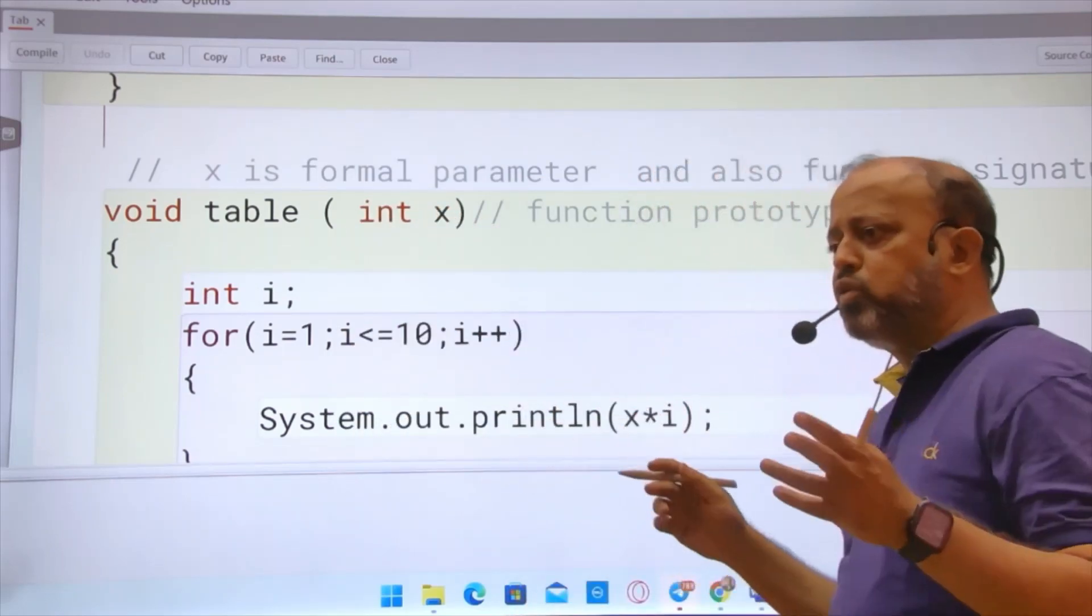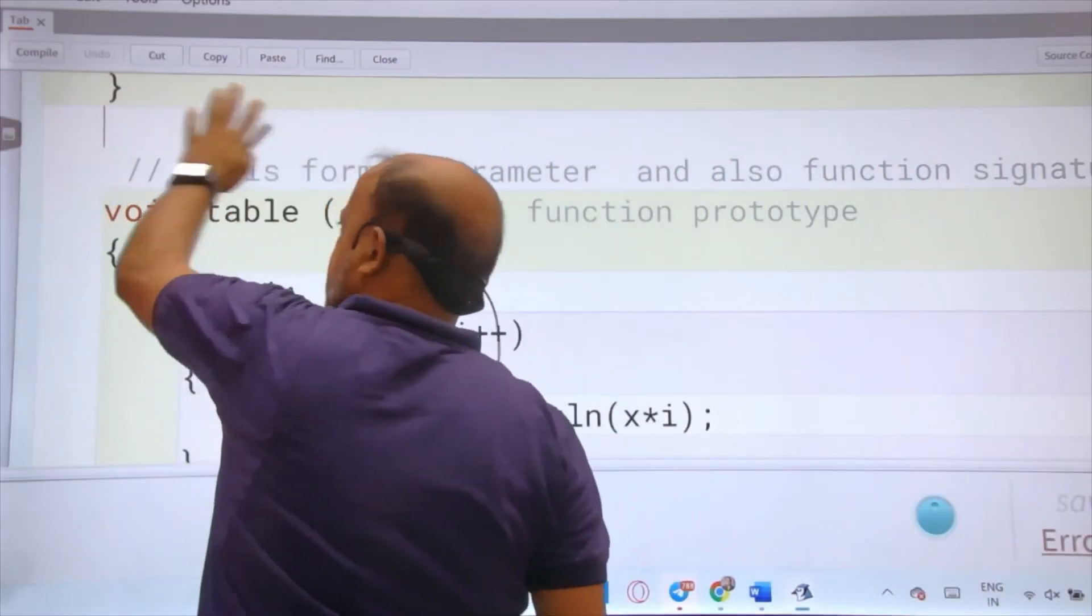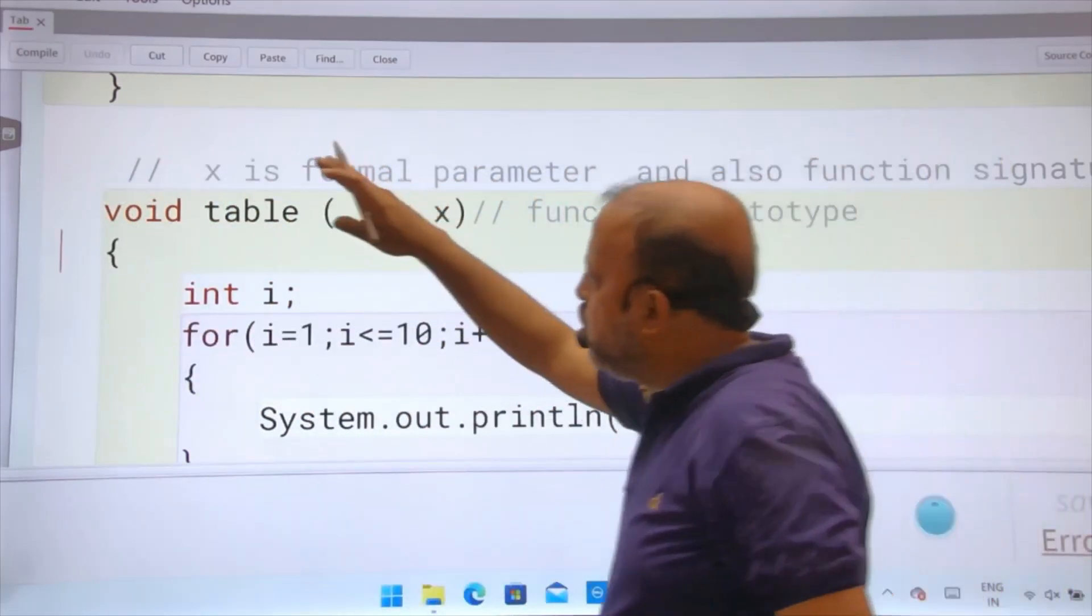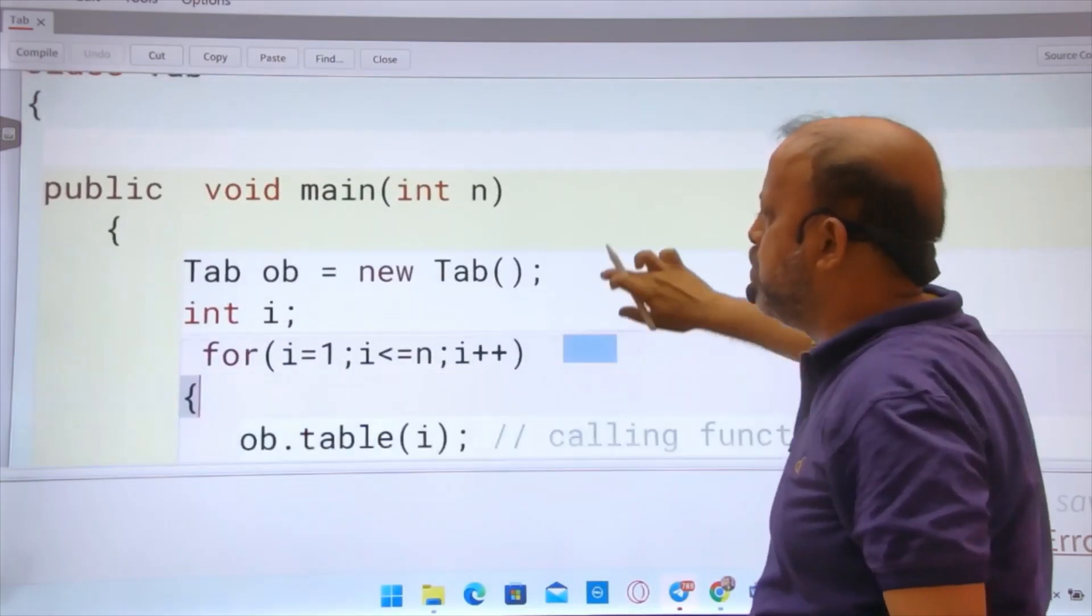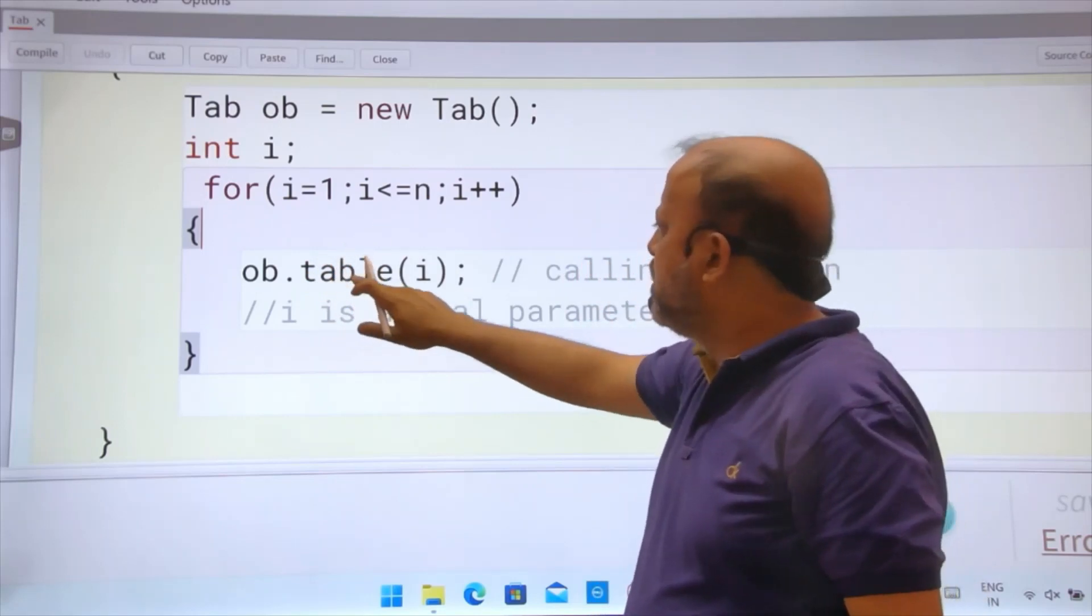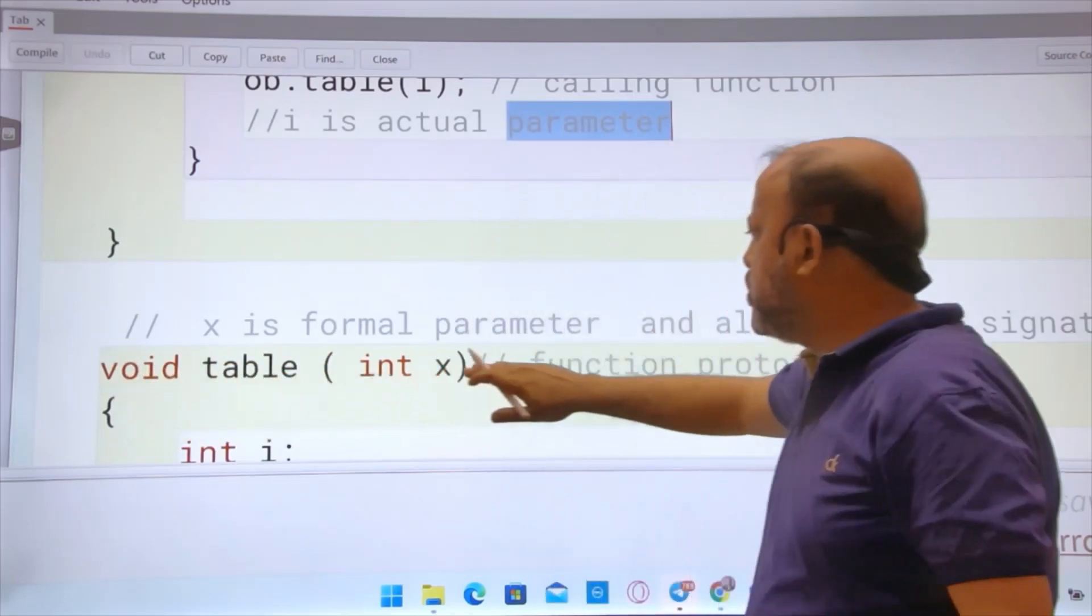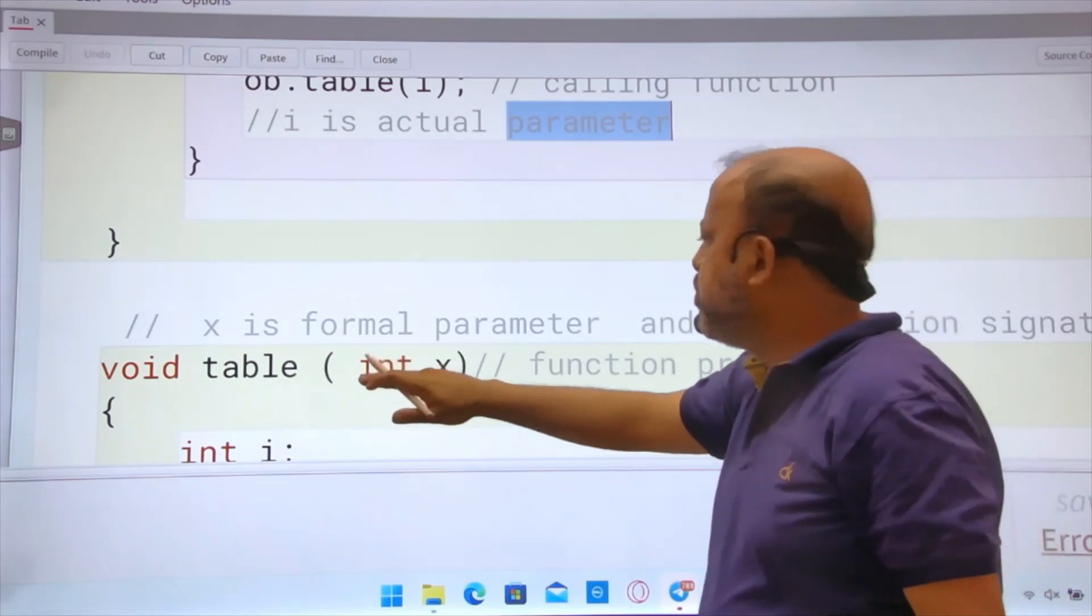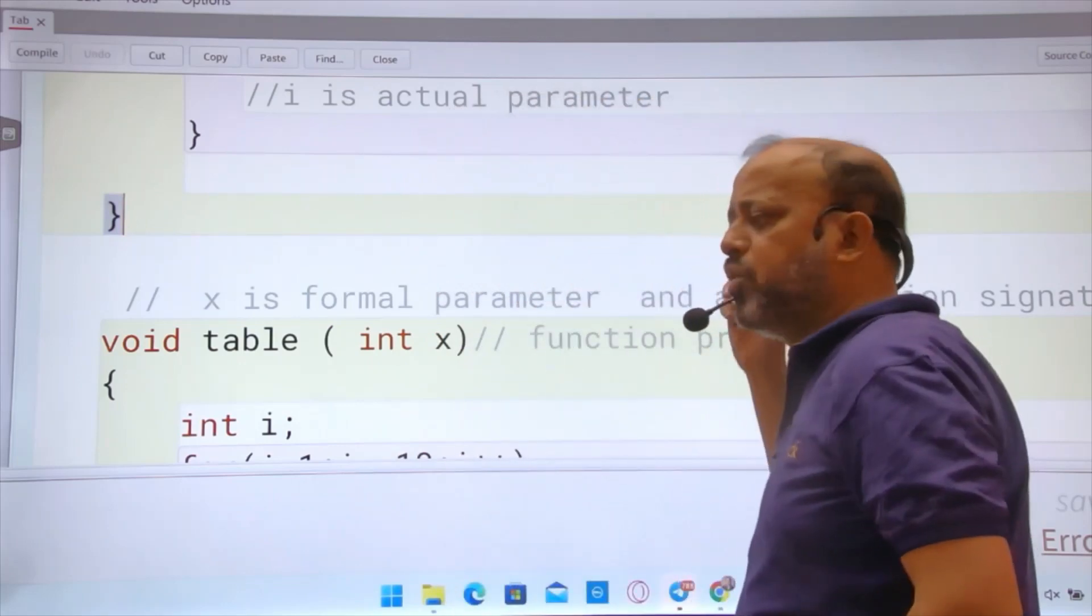It works in two ways. If you are using static public static void main, here also static, you just write table i. If you don't want to use static, you need to create an object. You can write anything - ob dot grass i, then this should be grass. This first line is known as function definition. Name with the argument is known as function signature. This is formal argument, this i is actual argument. When this program runs, you will get table from one till n.